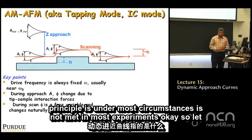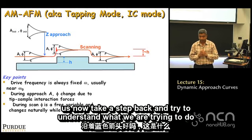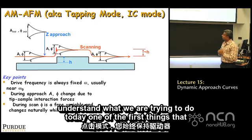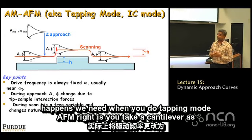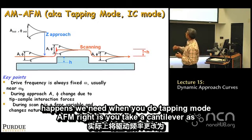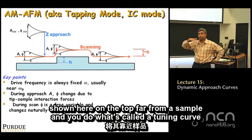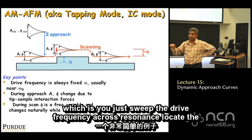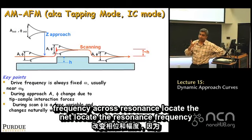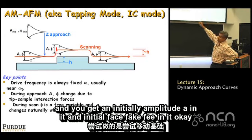When you do tapping mode AFM, you first take a cantilever far from a sample and perform what is called a tuning curve: you sweep the drive frequency across resonance, locate the resonance frequency, and obtain an initial amplitude A_init and an initial phase φ_init.